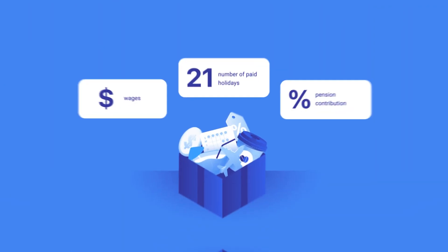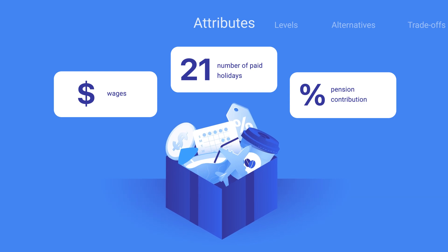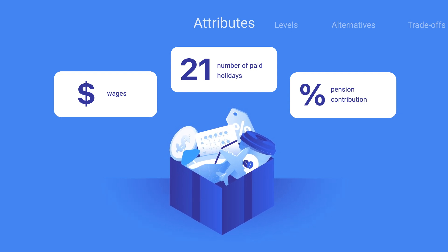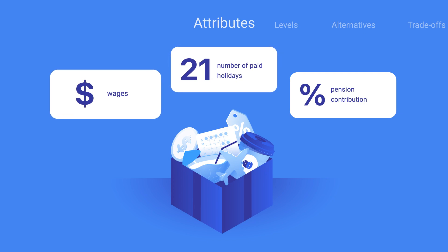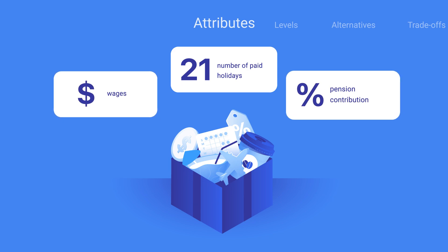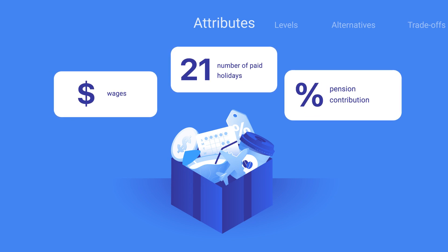In a Conjoint Analysis or a Discrete Choice Experiment, the things that people care about are called attributes. Let's say we own a company and want to create a better benefits package for our employees. There are different benefits that our employees may be interested in, like the number of paid holidays, wages, the amount contributed to the employee's pension, and so on. These are the attributes of the benefits package.